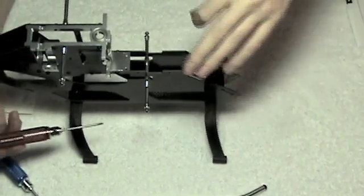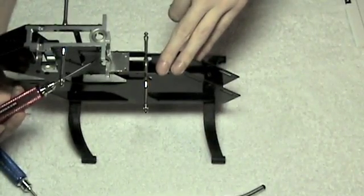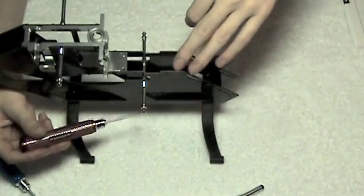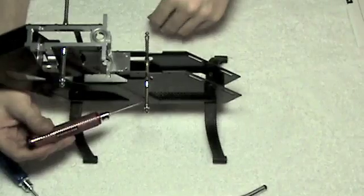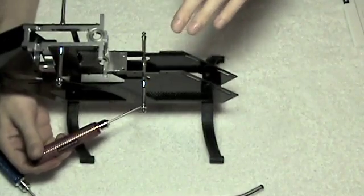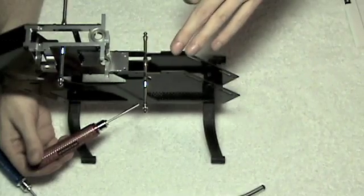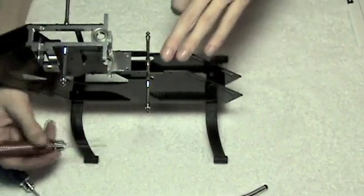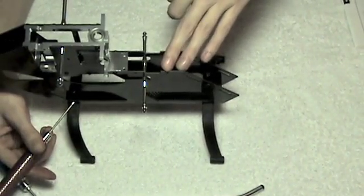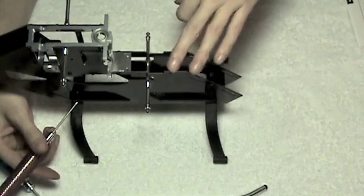In order to bolt the mainframes onto the skids, it's just a matter of putting the three by six bolts into the hole in the front and the hole in the middle. The hole on the back actually is not a three by six. That's actually a three by fourteen.